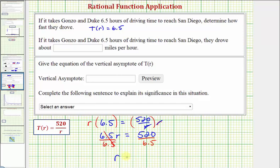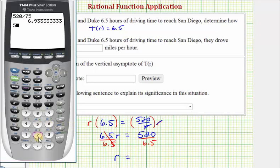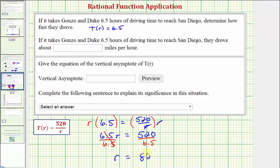The last step, we divide both sides by 6.5 to determine the rate in miles per hour. So we have r equals 520 divided by 6.5, which equals 80. So when the input r equals 80, the output or function value is 6.5, which means if it takes Gonzo and Duke 6.5 hours of driving time to reach San Diego, they drove about 80 miles per hour.